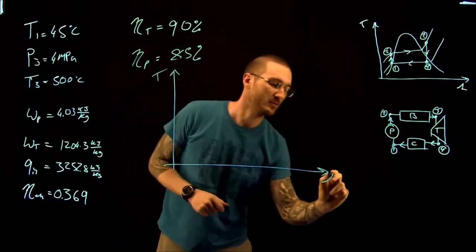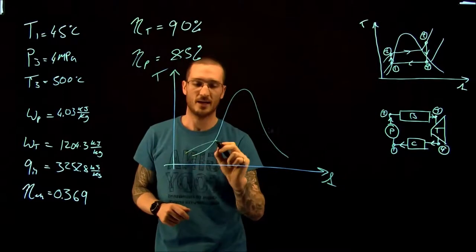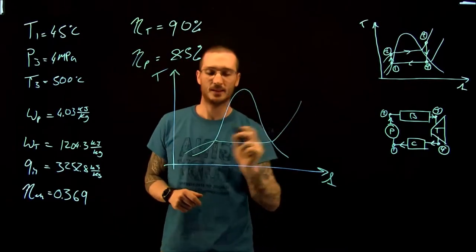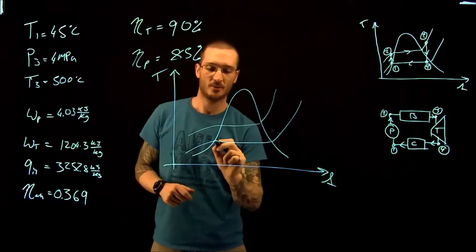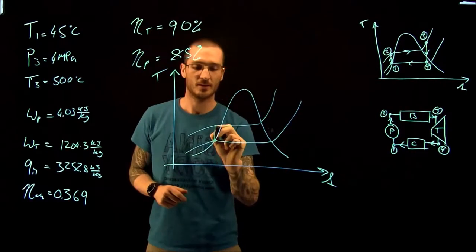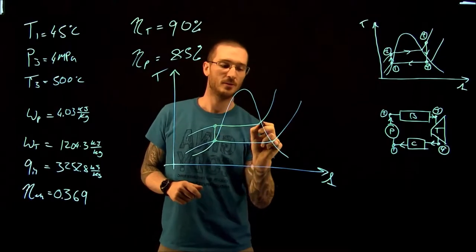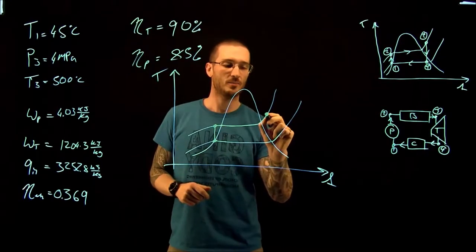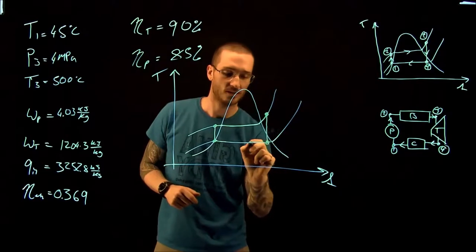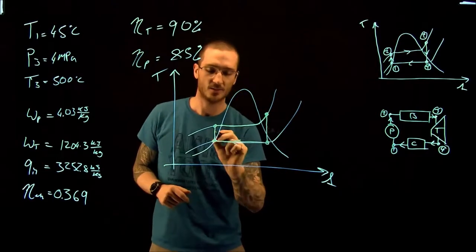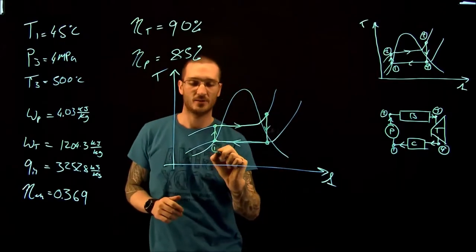I'm just going to label my axes. So we have our low pressure line and our high pressure line. We have our 0.1 going up isentropically to 0.2, heat addition to 0.3, isentropic to 0.4, and back to 0.1. This was our ideal case with 100% isentropic efficiency.